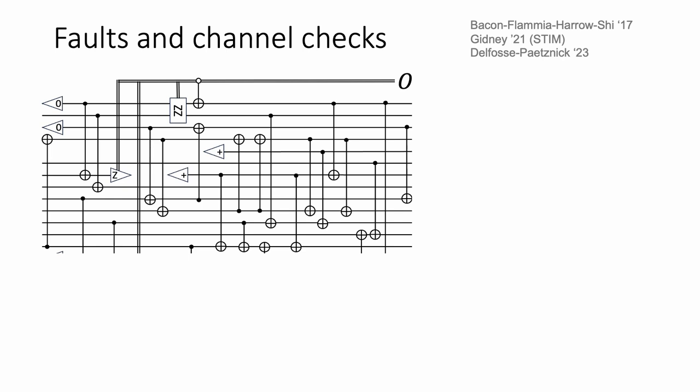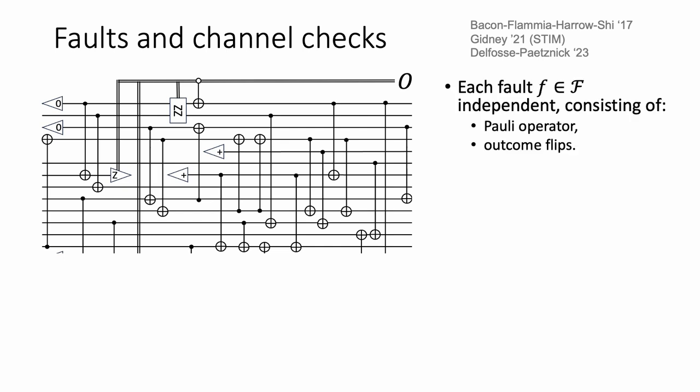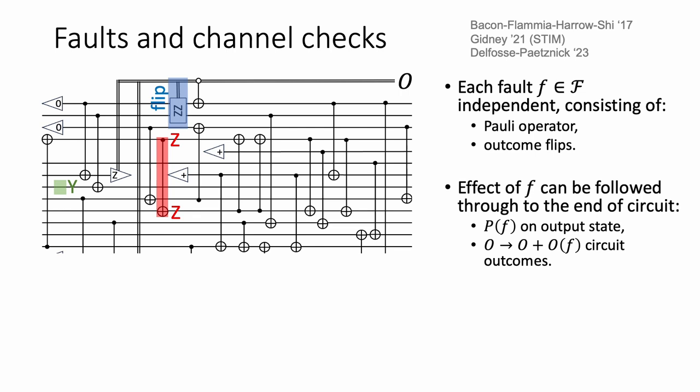I wanted to give some brief intuition about what faults look like in stabilizer channels. For some given circuit, we have some specific finite set of allowed faults that can occur. These include, for example, Pauli operators on individual qubits or multi-qubit Pauli operators, and also outcome flips of measurements that occur in the circuit. You can follow the effect of such a fault through the circuit — for example, a flip of a measurement outcome flips the control of the classically controlled NOT gate that follows, and the effect of that fault propagates through the circuit, can change other measurement outcomes, and leaves some residual Pauli operator at the end.